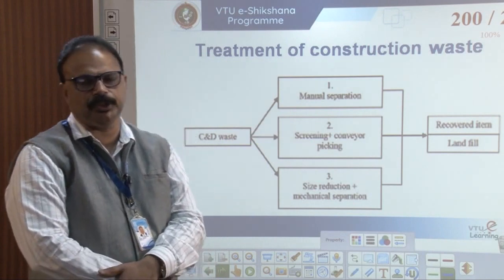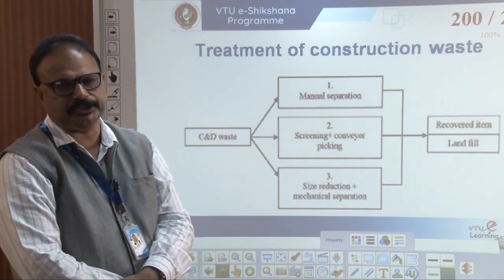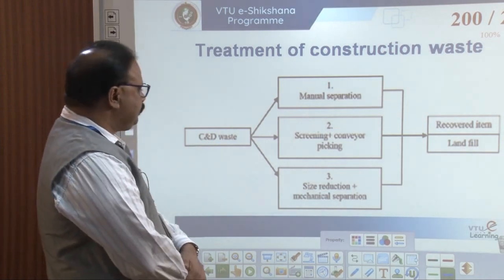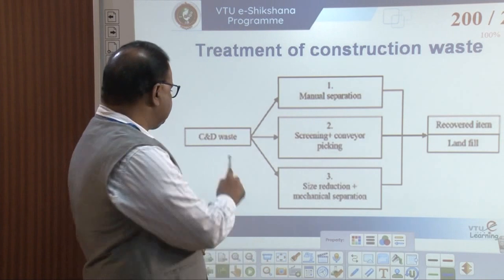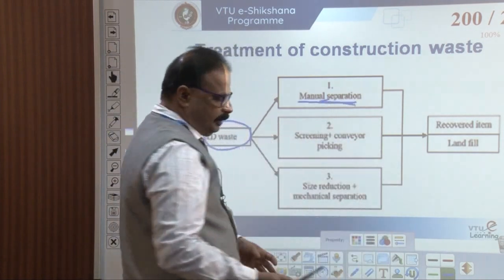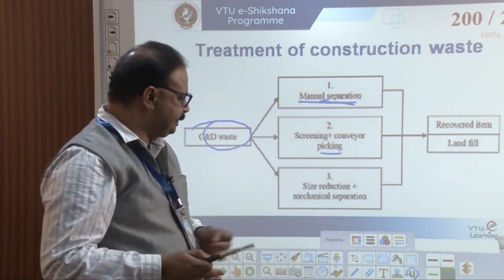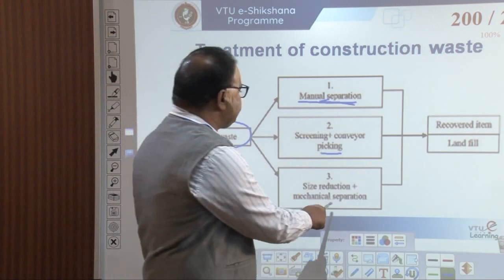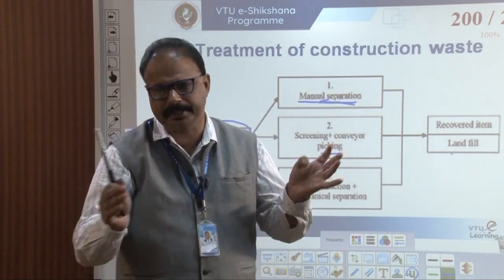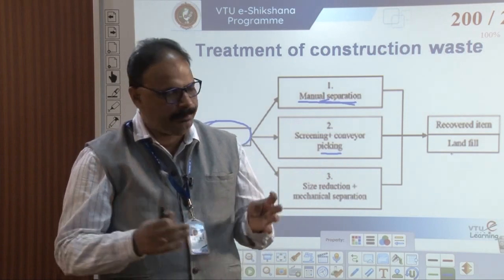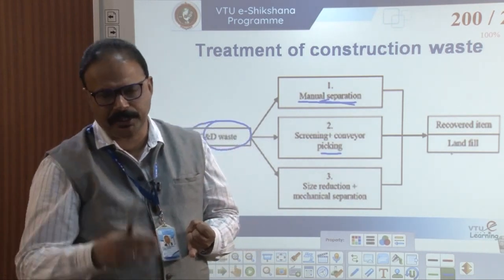Treatment of the construction waste — very, very important. Treatment of the construction waste is very, very important. How to treat? Manual separation, screening, picking, size reduction and landfilling. First, construction and demolish waste — first manual separation: by manually it is separated, segregated. Then screening is done. Conway picking — size reduction by mechanical separation plus mechanical separation. Landfilling. Some useful items are taken out. Materials are taken out manually — if an iron rod is there, it is taken out. If aggregate is there, they are separating.